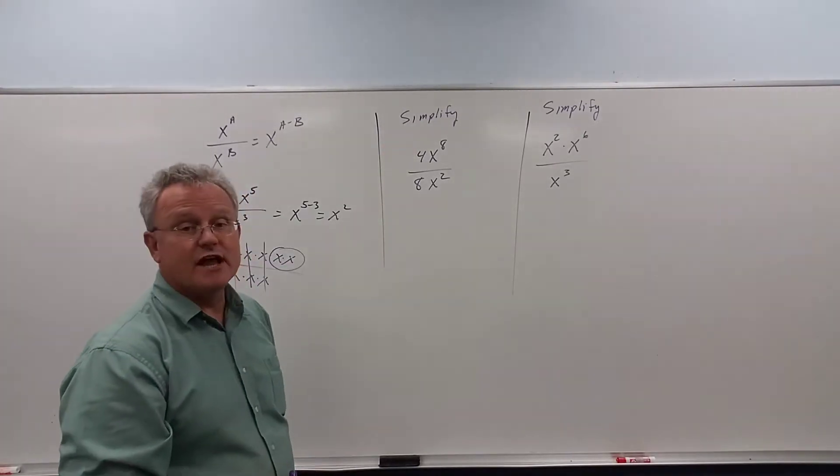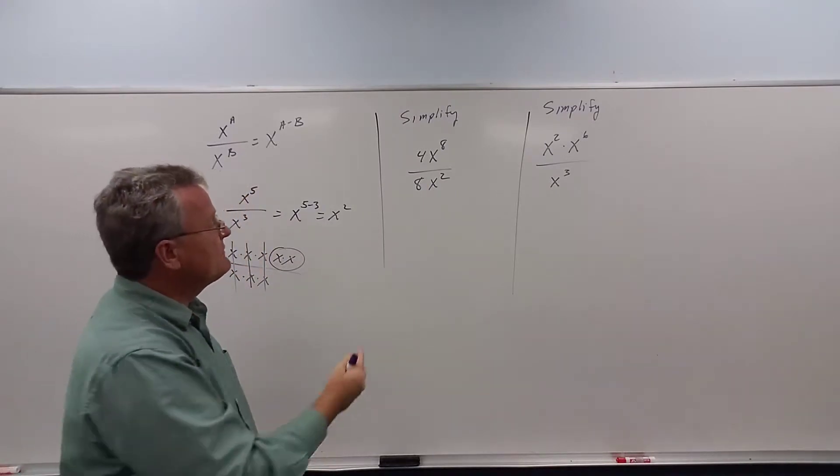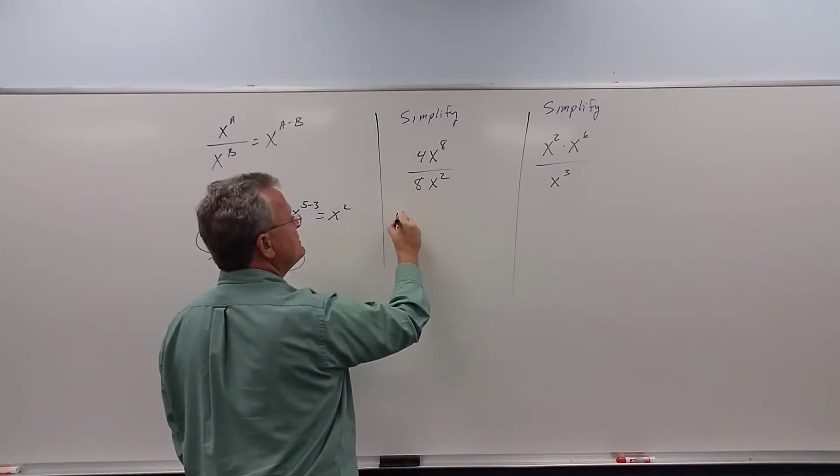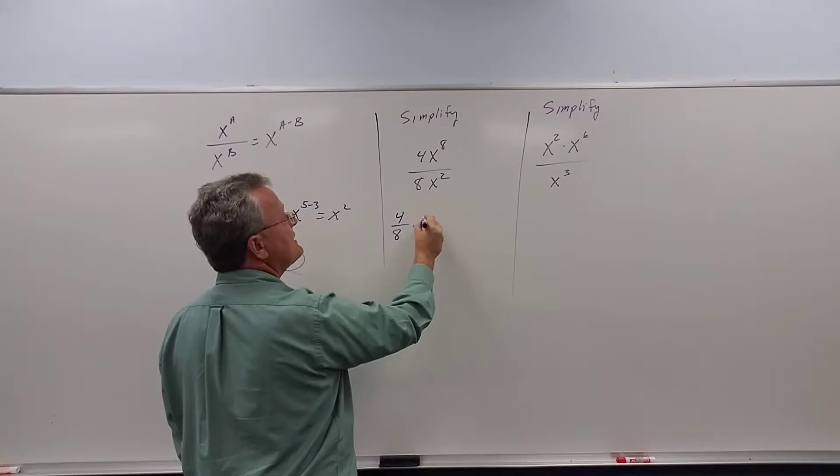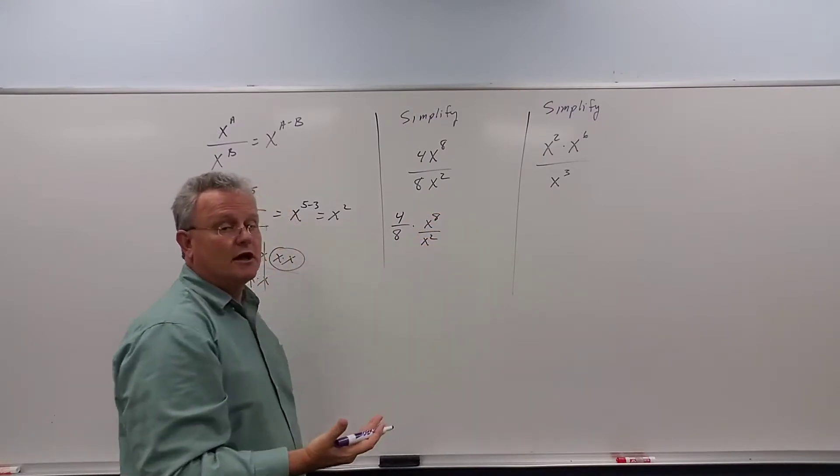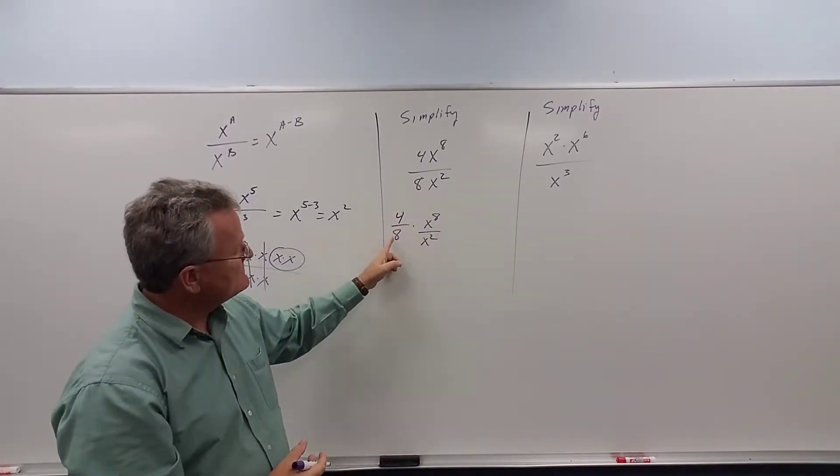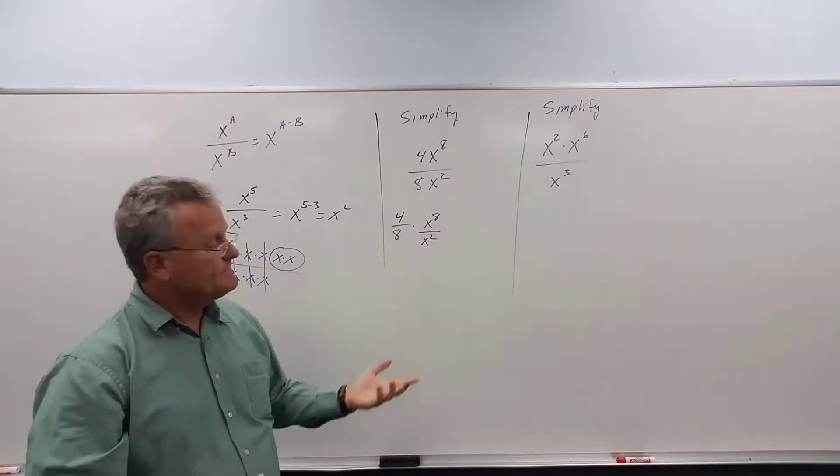Let's do another example. When you have numbers involved, just remember that this is the same thing as 4 over 8 times x to the 8 over x to the 2. Again, the reason why is because fractions. When we multiply these, you just multiply the top and you multiply the bottom, and it's the same thing.